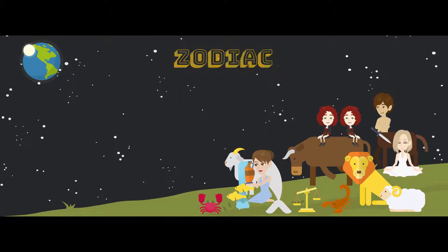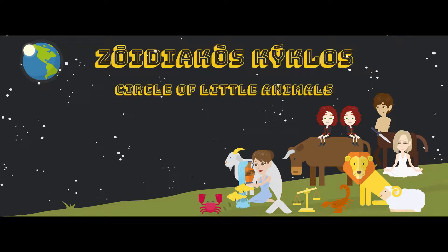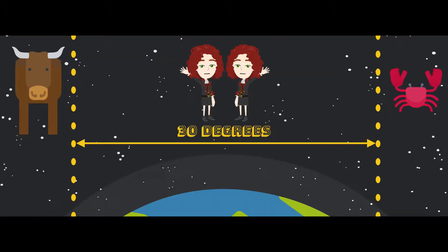The word zodiac was developed from the Greek word meaning circle of little animals. There are 12 signs within the zodiac. Each occupy 30 degrees of the celestial longitude.